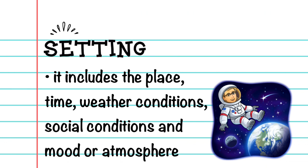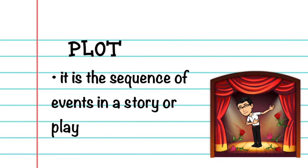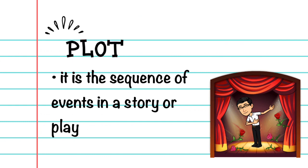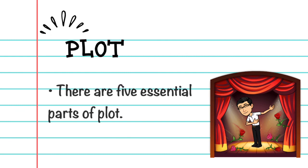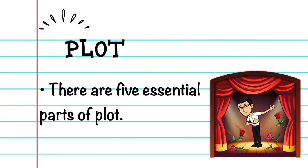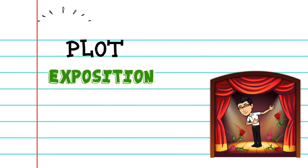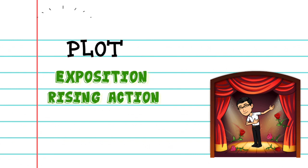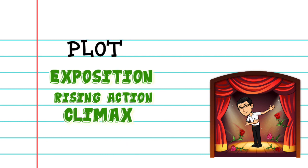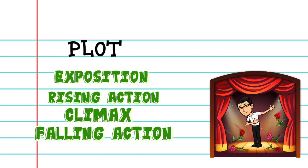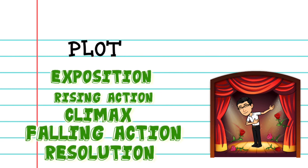Then we have the plot. It is the sequence of events in a story or play. A short story usually has one plot so it can be read in one sitting. There are five essential parts of plot: exposition or introduction, rising action, climax, falling action, and resolution or conclusion.